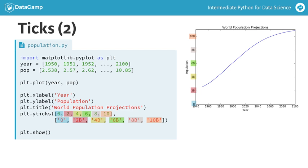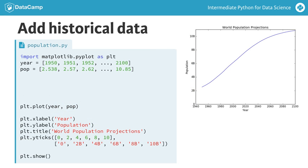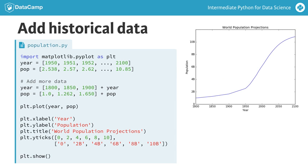Finally, let's add some more historical data to accentuate the population explosion in the last 60 years. On Wikipedia, I found world population data for the years 1800, 1850 and 1900. I can write them in list form and append them to the pop and year lists with the plus sign. If I now run the script once more, three data points are added to the graph, giving a more complete picture.